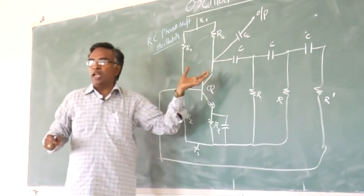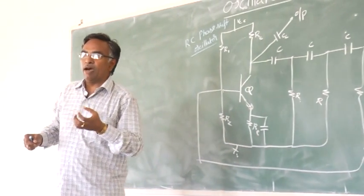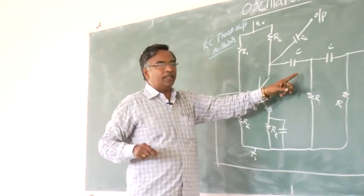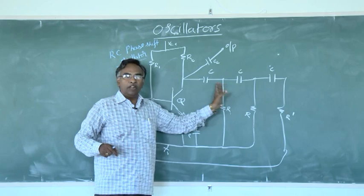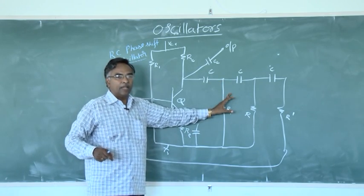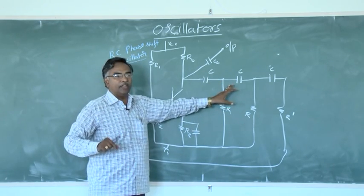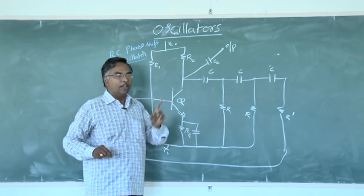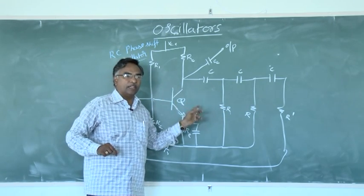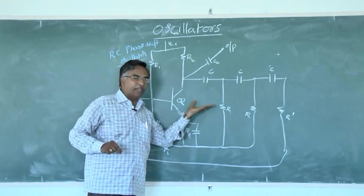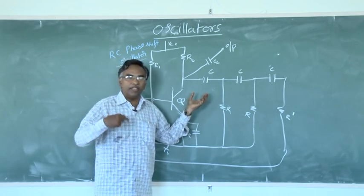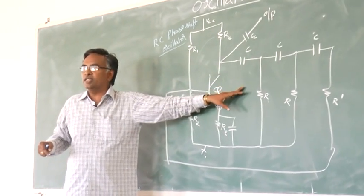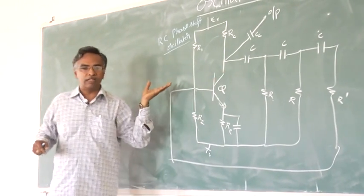The question is: how many minimum RC sections are required to produce oscillations? Minimum three RC sections are required. If you want to use more than three RC sections, the minimum number required for producing oscillations is nine RC sections.